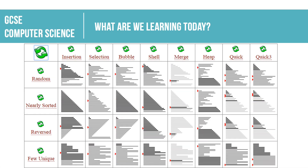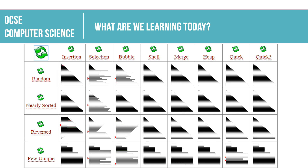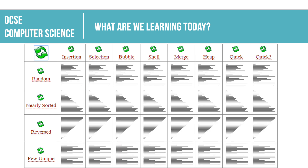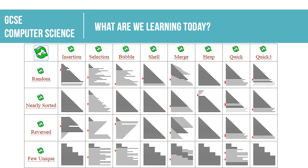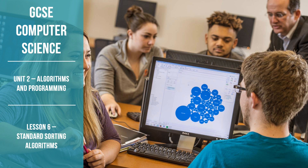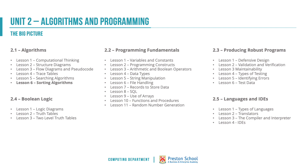Hello and welcome to this latest video in the OCR GCSE computer science series. This is lesson six of unit two, algorithms and programming. This lesson is looking at standard sorting algorithms and finishes off section 2.1. Unit two is split into five key sections: algorithms, programming fundamentals, producing robust programs, boolean logic, and types of languages and IDEs. This is the last lesson in the first section.